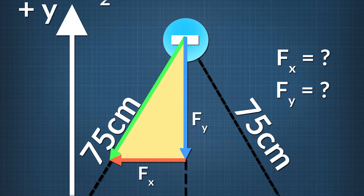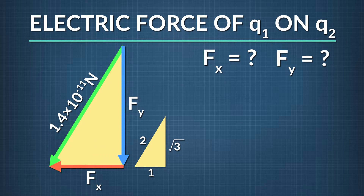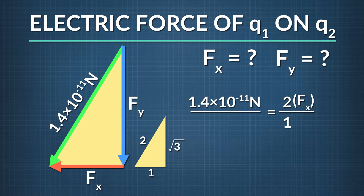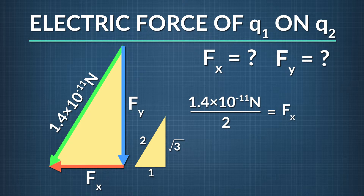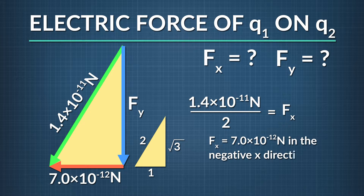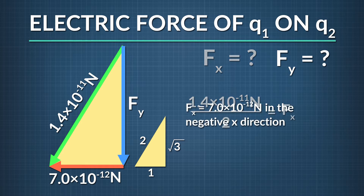The fact that we have a special right triangle lets us solve for f sub x and f sub y using ratios. The two triangles in this diagram are similar. That means the ratio of the total force of q1 on q2 to the x component of that force equals 2 divided by 1. Multiplying both sides by f sub x and dividing both sides by 2 shows that f sub x equals 1.4 times 10 to the negative eleventh newtons divided by 2, which equals 7.0 times 10 to the negative twelfth newtons in the negative x direction.